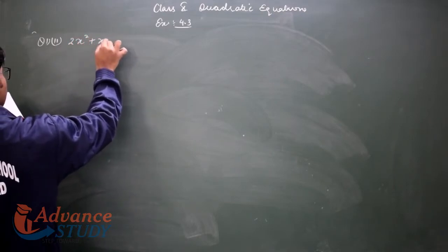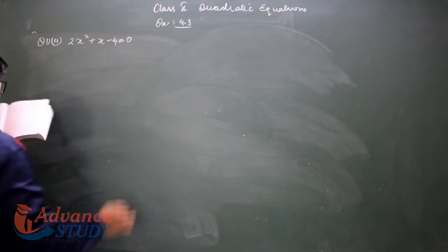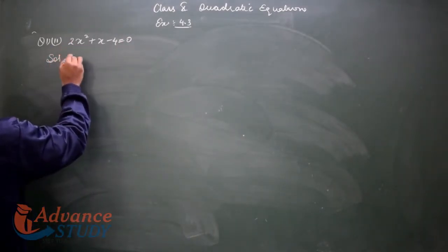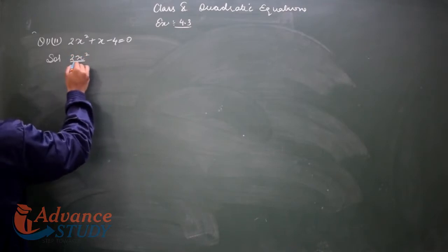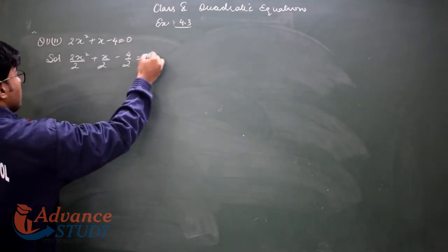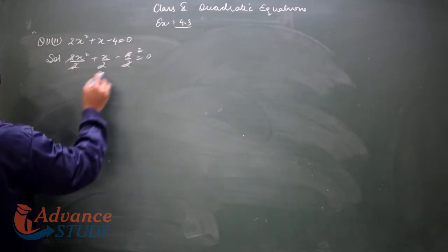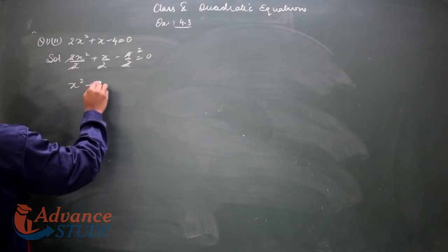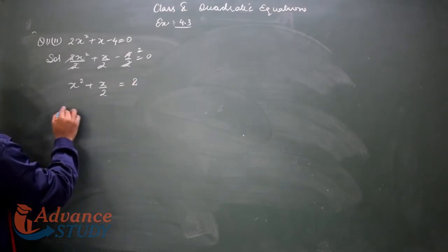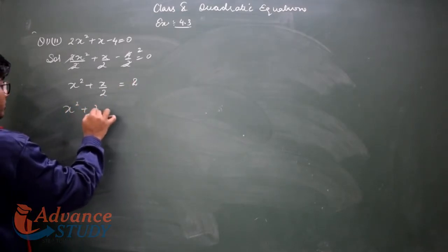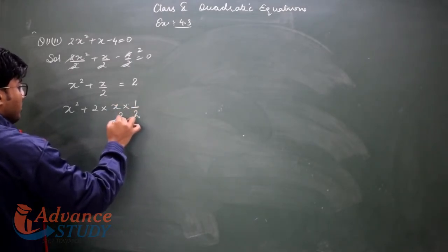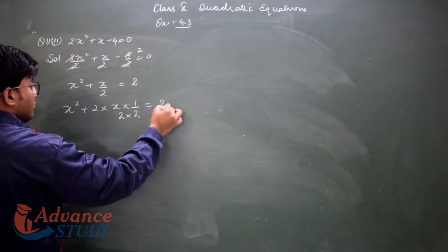Second part: 2x² + x - 4 = 0. We divide by 2 — divide by the coefficient of the first term. So: 2x²/2 + x/2 - 4/2 = 0. After cancellation we get: x² + x/2 - 2 = 0. Now we need to apply 2 from our side: 2 into x into 1 upon 2.